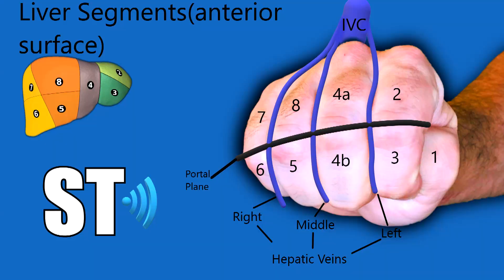The thumb makes up the caudate lobe. Your knuckles separate the liver in the horizontal plane where the portal vein lies, separating superior from inferior. Then you have these three digit lines that are the hepatic veins: left hepatic vein, middle hepatic vein, and right hepatic vein. So it would be thumb = caudate lobe, segment 2, 3, 4A, 4B, 5, 6, 7, and 8.